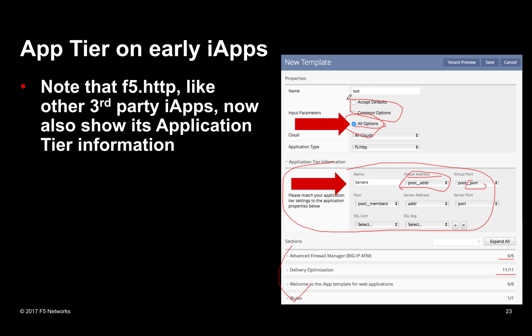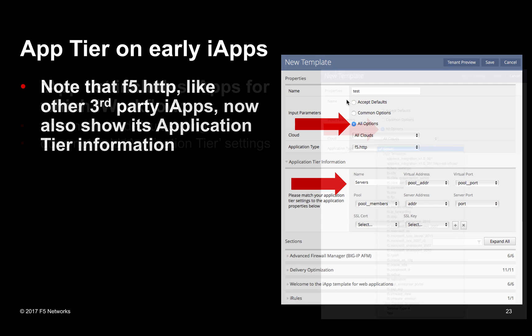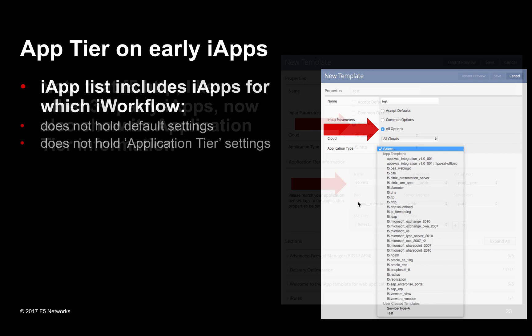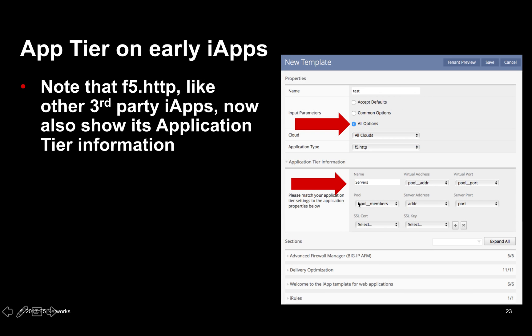The reason we've now exposed the app tier is that from 2.1, it's going to be exposed for you to validate. When we predetermined those mappings for a select few iApps, it was kind of inhibitive — it took away some flexibility and made it easier for newcomers but limited what you could potentially do. So we've removed that, and the application tier will be present from now on when you install iApps, meaning you'll always see this lower section.